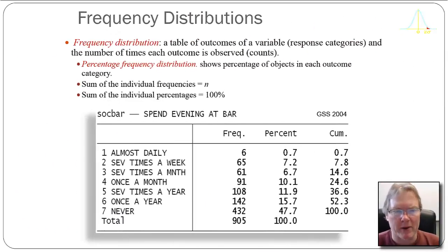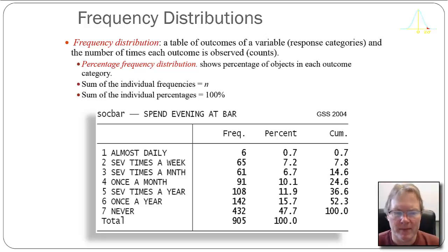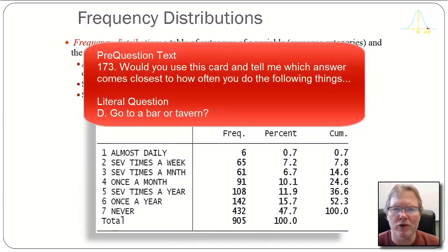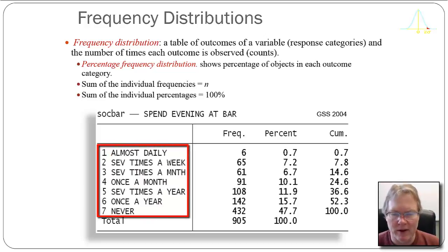Let's push on to frequency distributions. A frequency distribution, simply put, is just a table of outcomes. By outcomes we mean the categories of the things that we're measuring, and we simply keep a tally of the number of times that each of those outcomes occurred. I'm looking at this variable from the General Social Survey in 2004 called SOCHBAR, which asked people how frequently they spend an evening at a bar or a tavern.